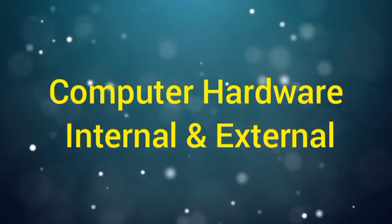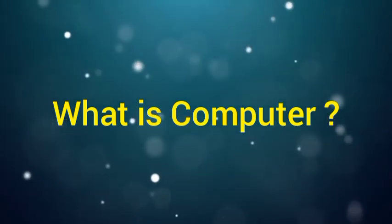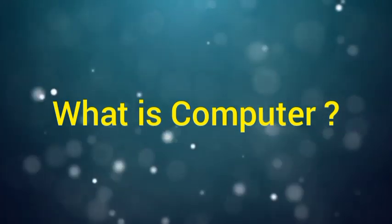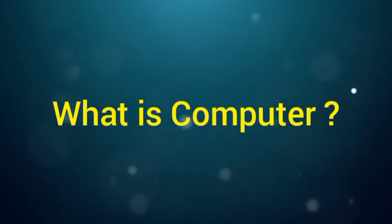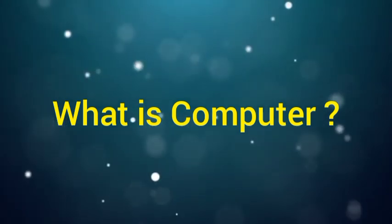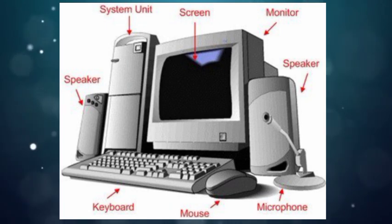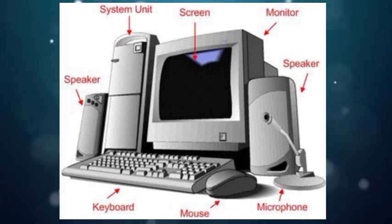First we should know what a computer is. A computer is an electronic machine — you must already know from your previous classes that it makes our work easier and faster. In this chapter we will discuss more points about computer hardware. A computer is a machine basically designed with physical parts that are called hardware. All the physical parts of the computer that can be touched by the user are called hardware. In this chapter we will learn about various types of computer hardware, especially internal and external hardware.